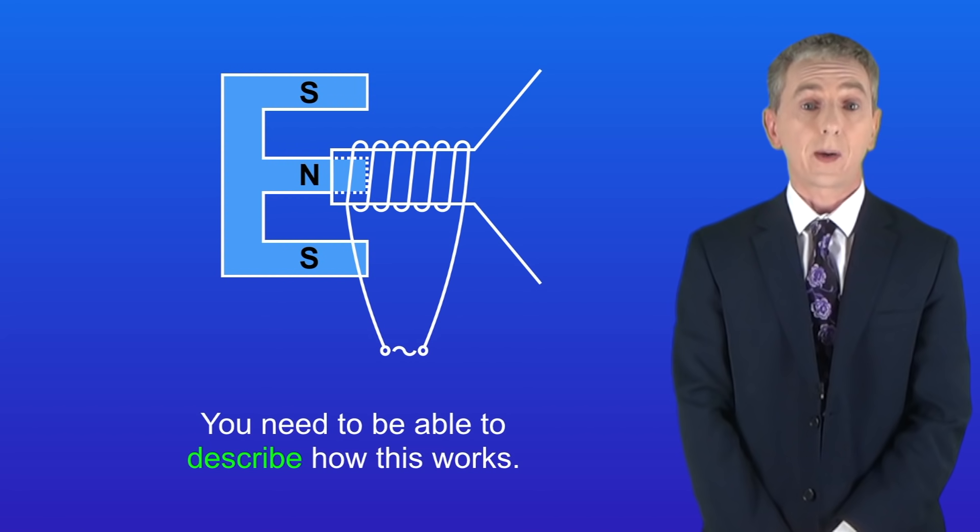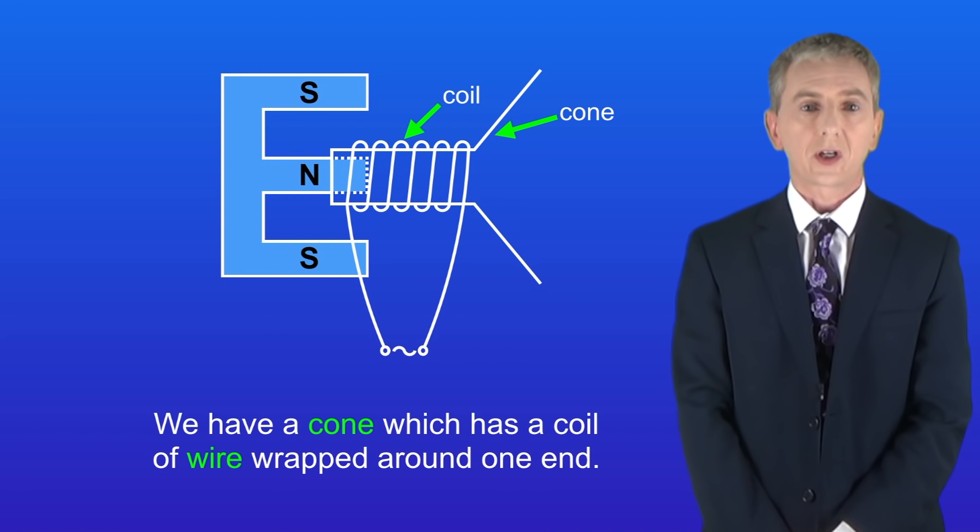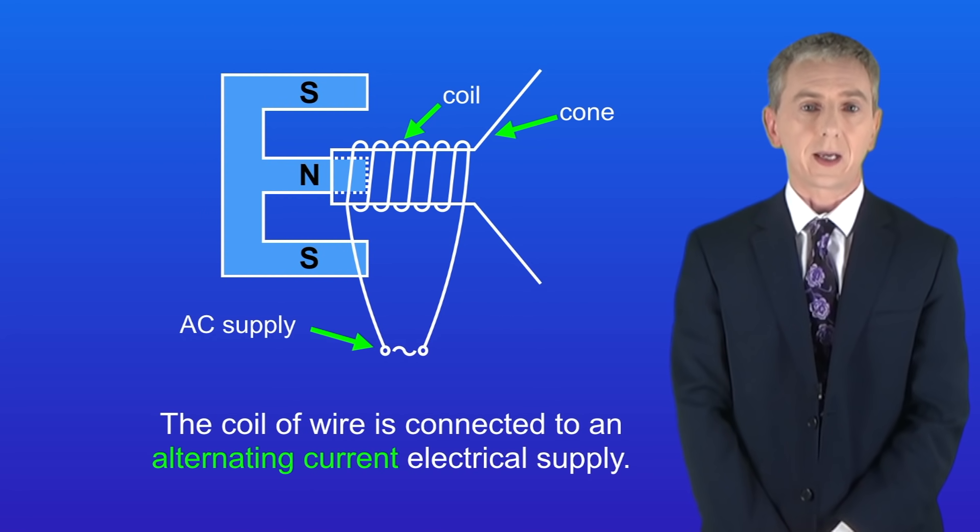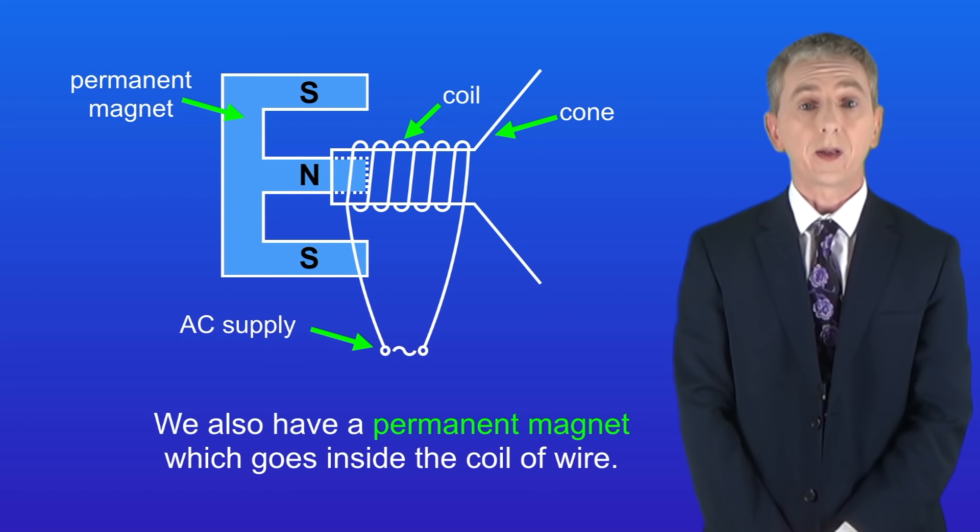You need to be able to describe how this works. So we've got a cone which has a coil of wire wrapped around one end. The coil of wire is connected to an alternating current electrical supply. We've also got a permanent magnet which goes inside the coil of wire.